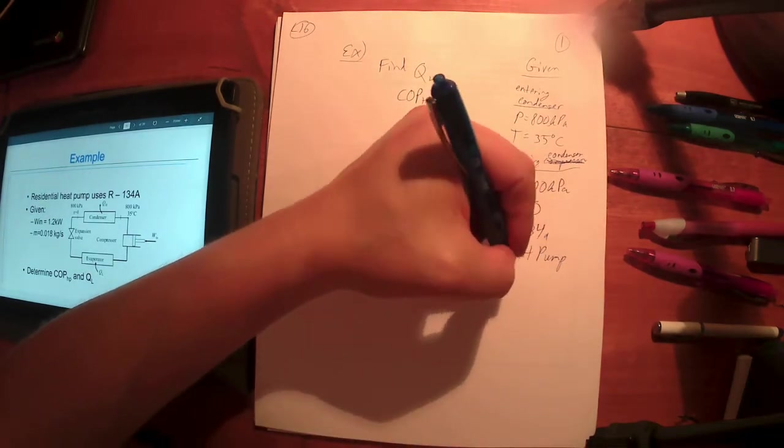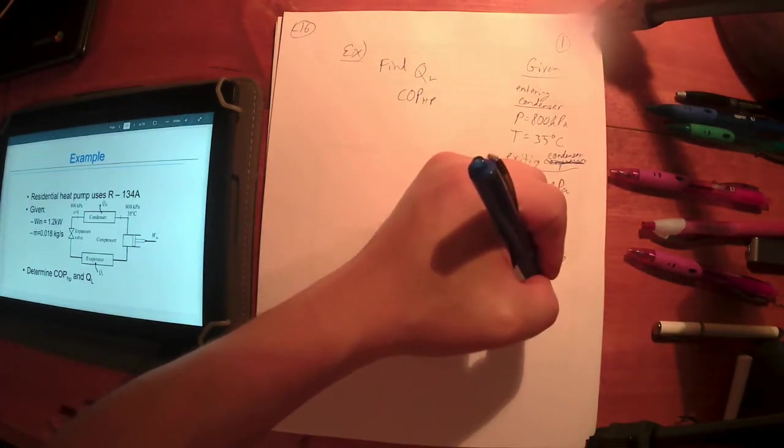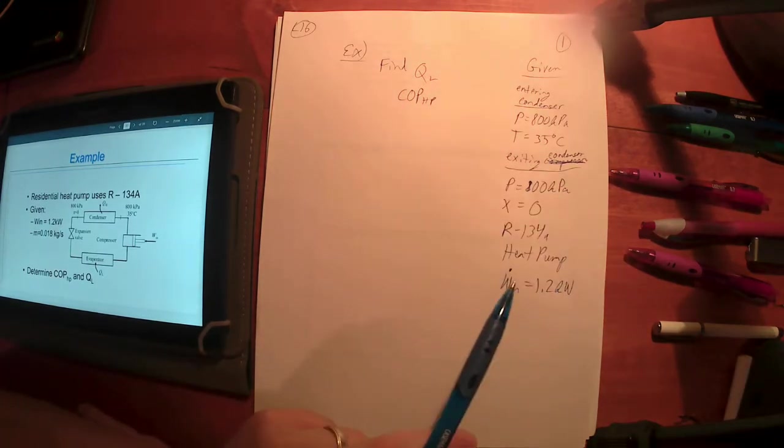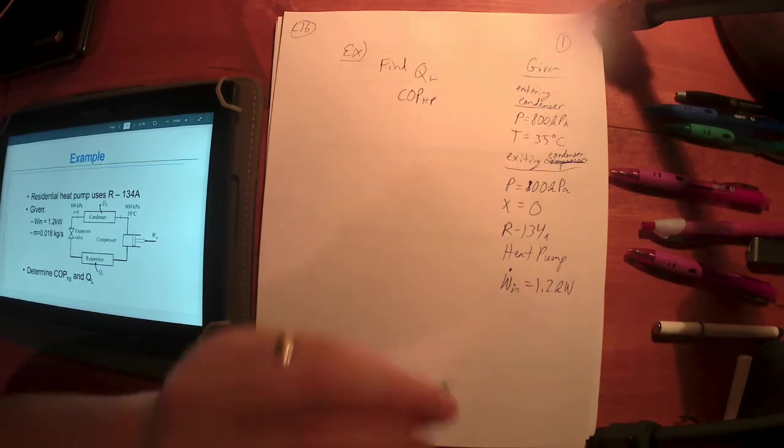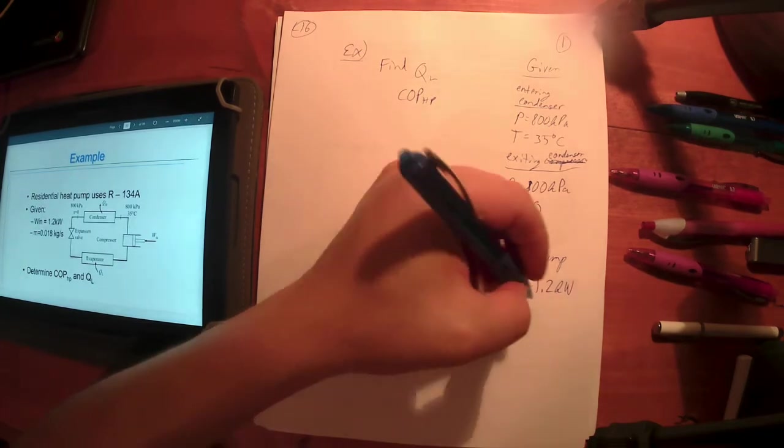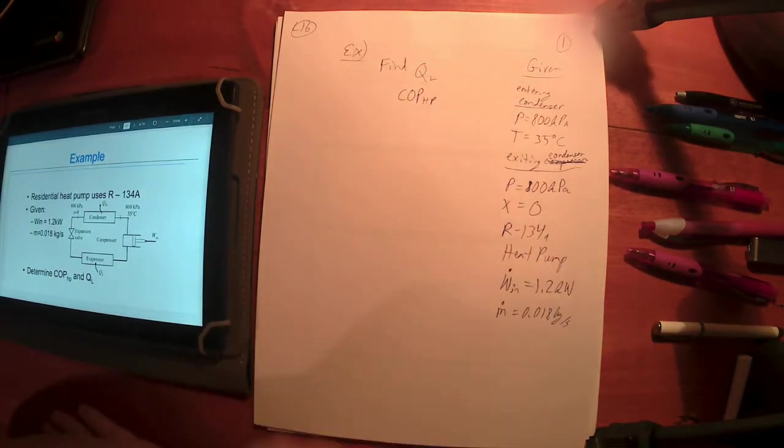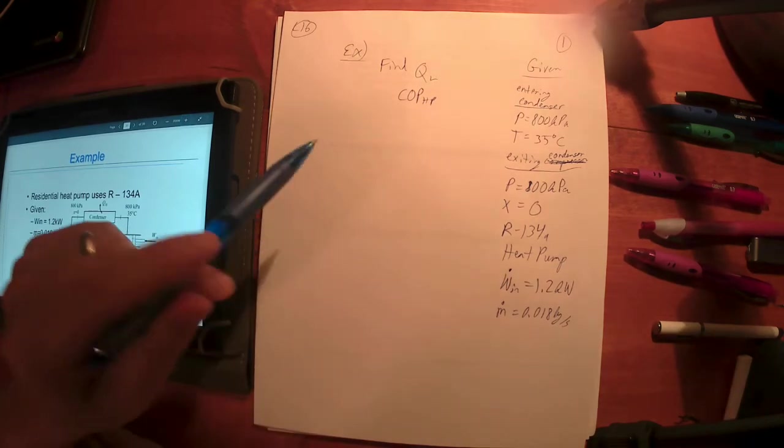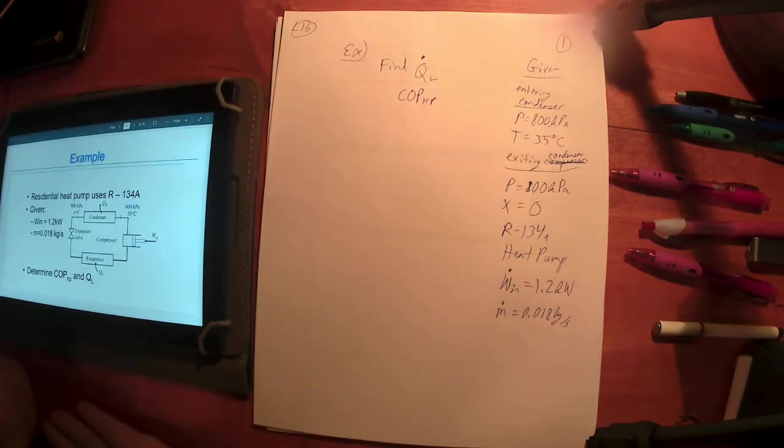They've told me the power input to the compressor, W dot—I don't have a dot on my PowerPoint but it is a W dot—because this is 1.2 kilowatts. How do you know it's a dot? Well, watts are energy per time. W without a dot is just energy; W dot is energy per time, that's power. Same thing with the mass flow rate here. They've given me 0.018 kilograms per second. I know that's an m dot because that's mass per time. The problem wants to know the rate at which heat is being removed from the outside air and the coefficient of performance for this heat pump.